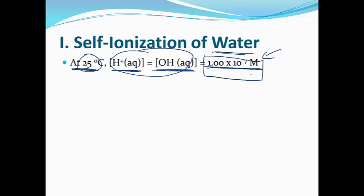Both the H-plus and OH-minus concentrations in pure water will be 1.00 times 10 to the negative 7 molar. This applies for pure water only at 25 degrees Celsius — if you change the temperature, the concentrations will still be equal to each other, but that specific value will be different.